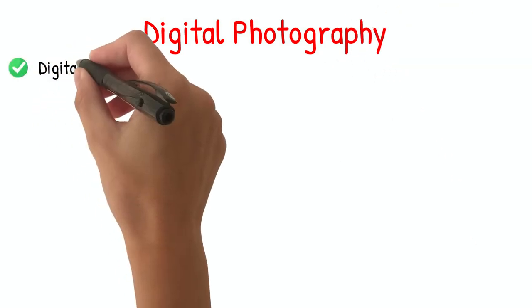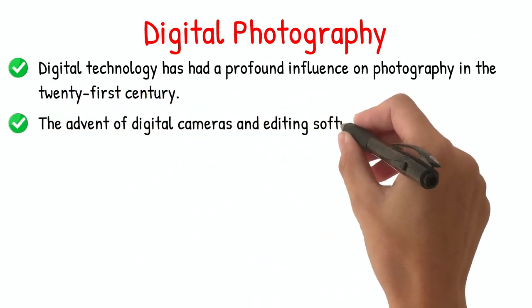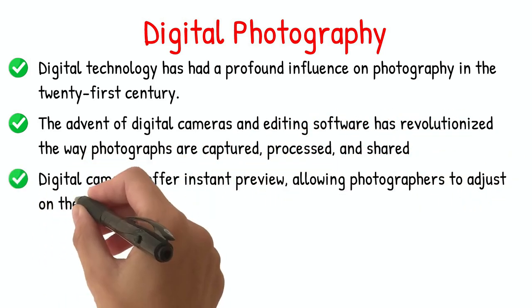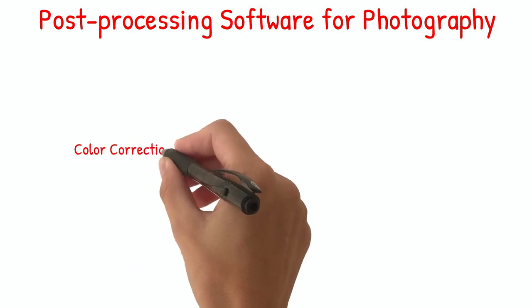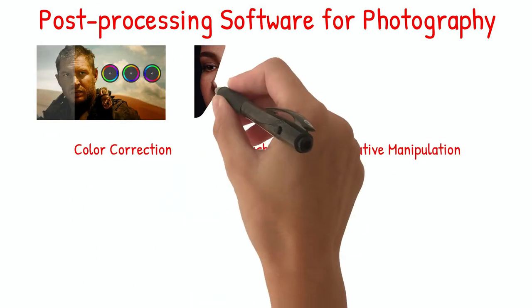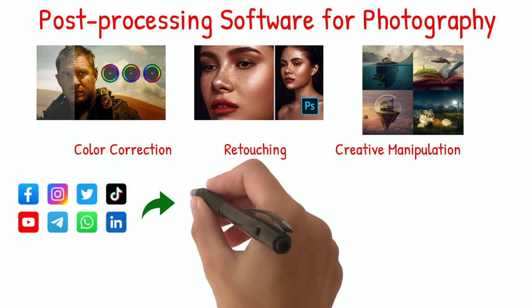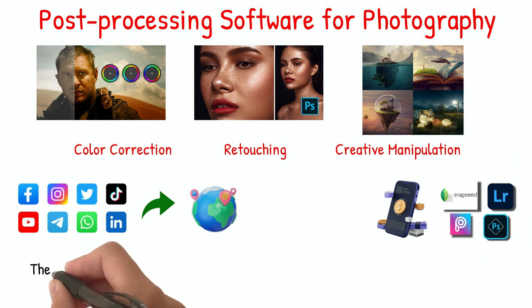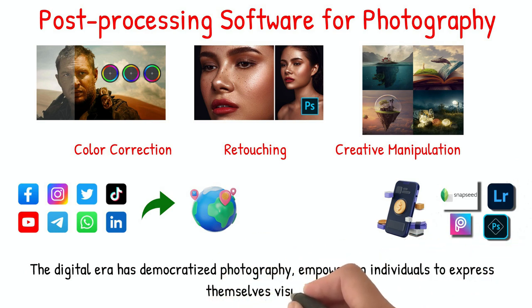Digital technology has had a profound influence on photography in the 21st century. The advent of digital cameras and editing software has revolutionized the way photographs are captured, processed, and shared. Digital cameras offer instant preview, allowing photographers to adjust on the spot. Post-processing software enables precise control over image editing, including color correction, retouching, and creative manipulation. The rise of social media has facilitated the easy sharing of photographs to a global audience. Additionally, advancements in mobile phone cameras and photo editing apps have made photography more accessible and widespread. The digital era has democratized photography, empowering individuals to express themselves visually.